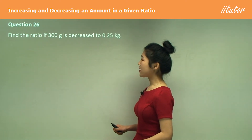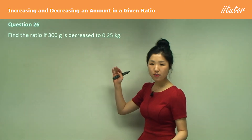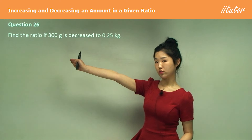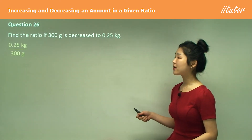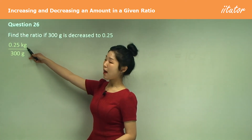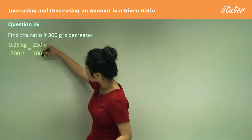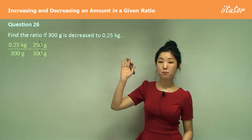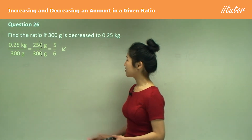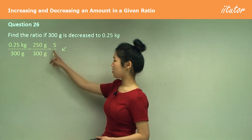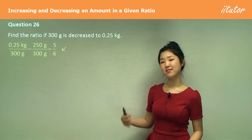Question 26: find the ratio if 300 grams is decreased to 0.25 kilograms. New over old: 0.25 kilograms over 300 grams. Convert the kilograms to grams by multiplying by 1,000. Cancel the zeros and divide top and bottom by 5 to get 5 on 6. Because it's a decreasing situation, you can see that the numerator is less than the denominator, which clearly tells us it's decreasing.